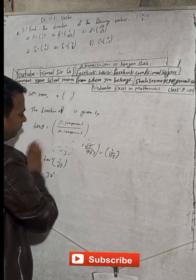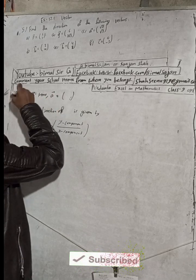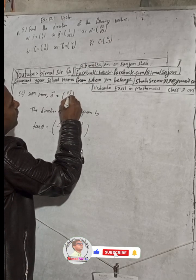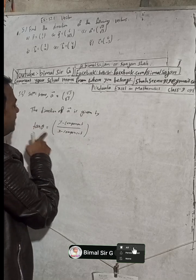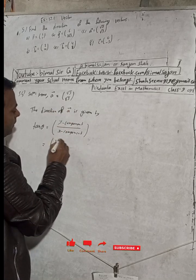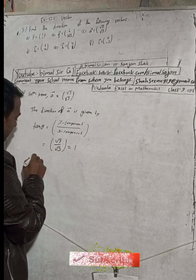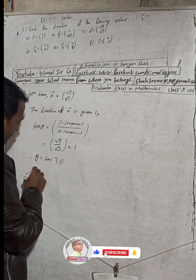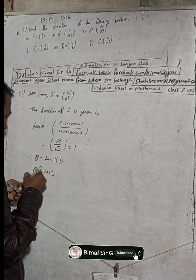For part (c), vector A is equal to (√3, √3). The direction of A vector is given by tan theta equals y component divided by x component, which is √3 divided by √3, equals 1. Therefore theta equals tan inverse of 1, which we already found is 45 degrees. So the answer for part (c) is 45 degrees.